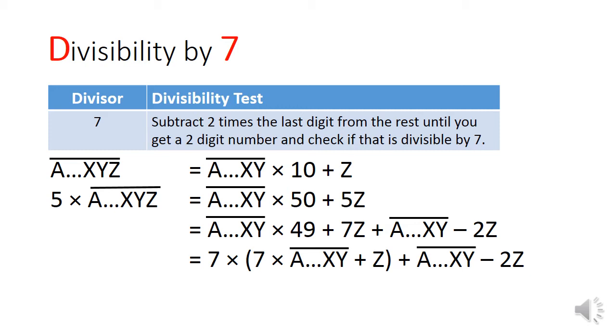Let's look at how this test works. First, I separate the last digit z from the rest. This gives me the concatenated number a to xy multiplied by 10 plus z. Next, I multiply both sides by 5. Two points to note here. First, because 5 and 7 are co-prime, if 5 times the original number is divisible by 7, the original number must also be divisible by 7. Second, I am doing this because 50 is just 1 more than 49, which happens to be a multiple of 7. This allows me to rearrange the expression into two groups. The first group is clearly divisible by 7. The second group is the portion that I need to check for divisibility, and if that number is large, we can perform this trick over and over again. The caveat here is that any non-zero remainder that you get from this test will not be the remainder for the actual division.